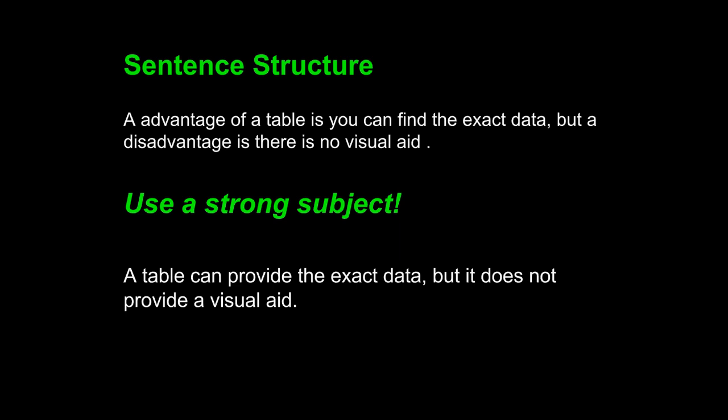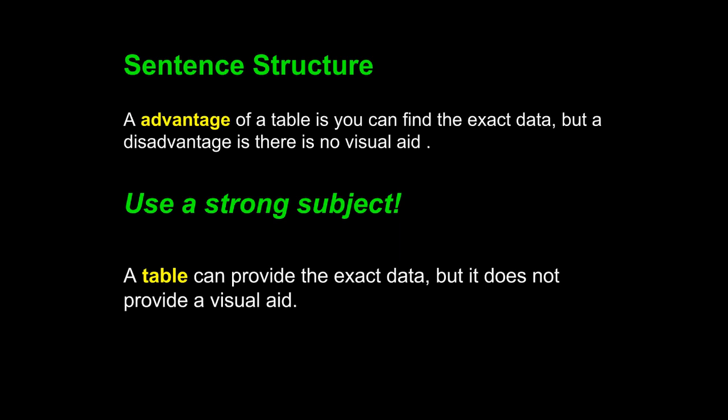Table is the thing that you are discussing in this particular sentence. You are not discussing advantage and disadvantage — you are discussing a table, and you are showing both the advantage and disadvantage of it. Since the table is your focus noun, it should be the subject of the sentence. A table can provide the exact data, but it does not provide a visual aid.